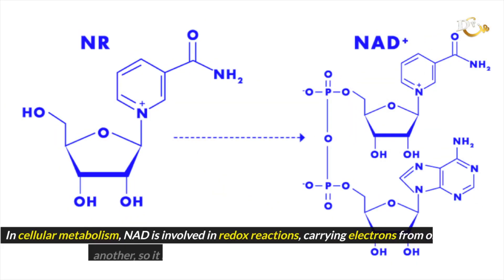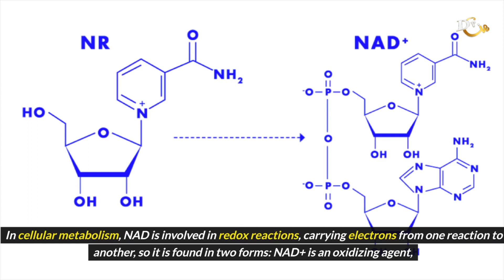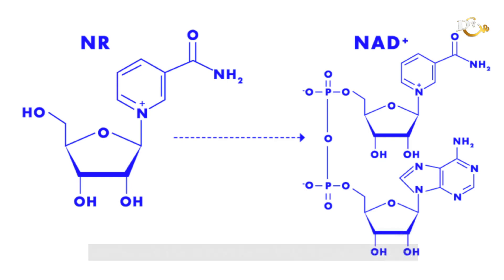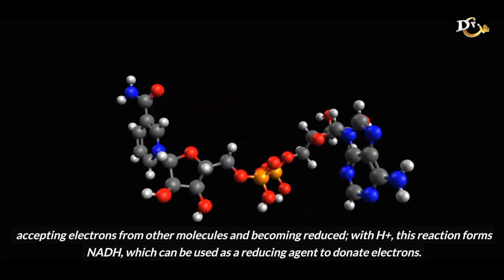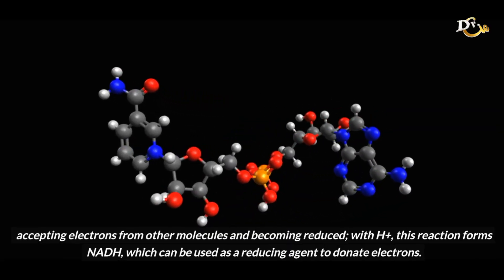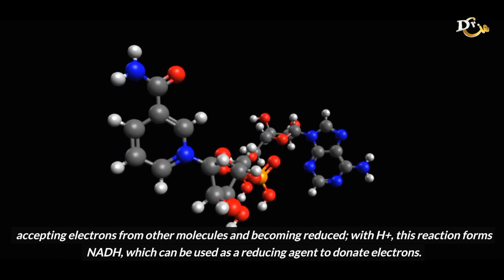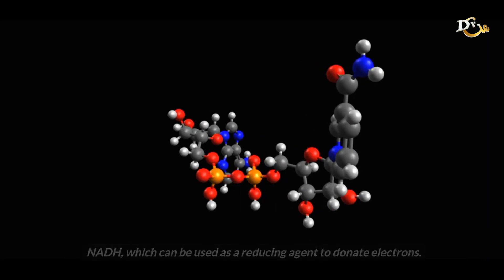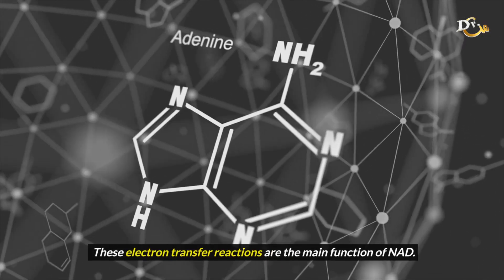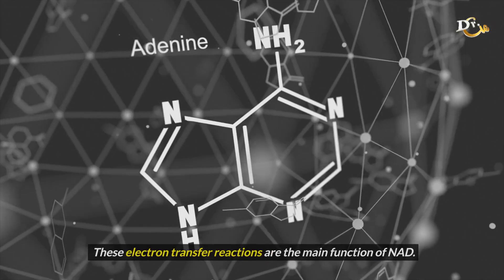In cellular metabolism, NAD is involved in redox reactions, carrying electrons from one reaction to another. It is found in two forms. NAD is an oxidizing agent, accepting electrons from other molecules and becoming reduced. This reaction forms NADH, which can be used as a reducing agent to donate electrons. These electron transfer reactions are the main function of NAD.